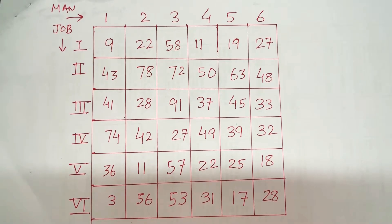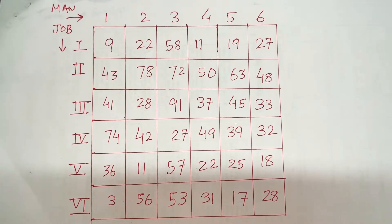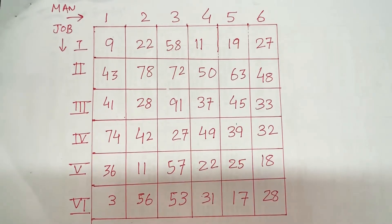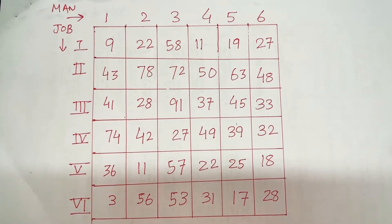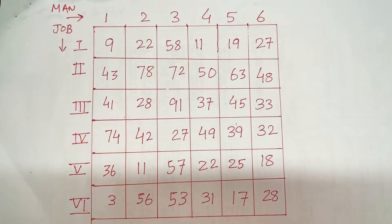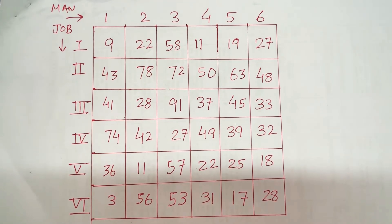So this is a 6-men and 6-jobs problem. Each man is capable of doing each job and these are the different assignment costs which are given. We need to solve this particular assignment problem. In the reduction matrix method, the first thing is to identify the minimum of each row and subtract it throughout.